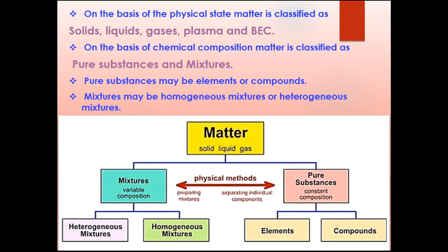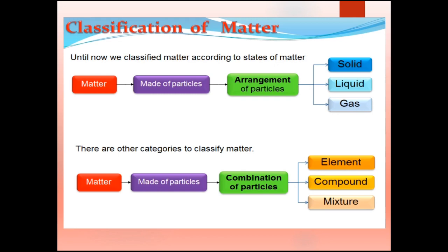So the physical classification considers the physical state: matter exists mainly as solid, liquid, and gas. According to chemical classification, matter can be classified as pure substances and mixtures. Matter is made up of small particles; according to particle arrangement it can be classified as solid, liquid, and gas; and according to how particles combine, it can be an element — with only a single type of atom — a compound where atoms of more than one element combine chemically in a fixed ratio, or a mixture.